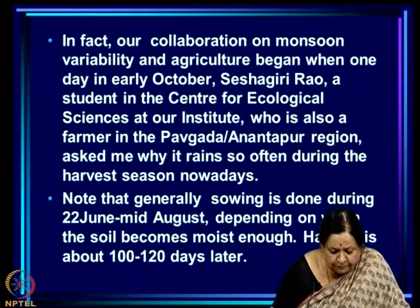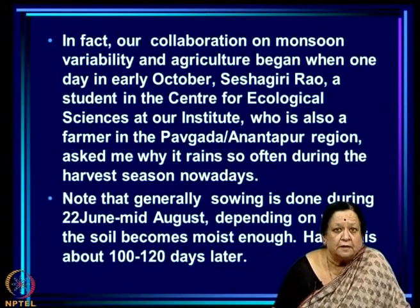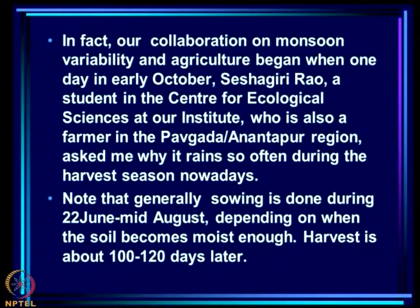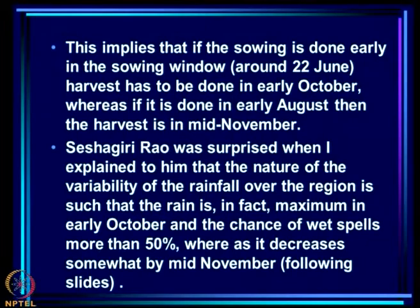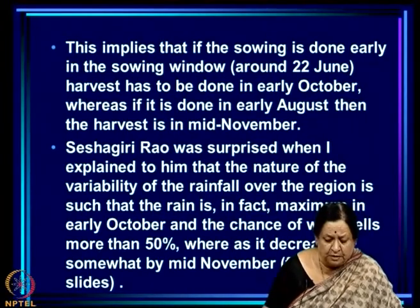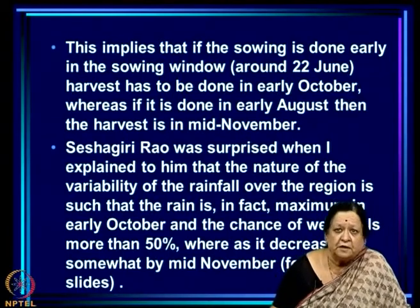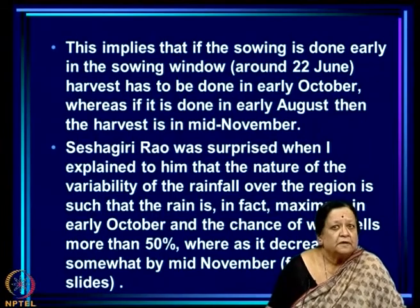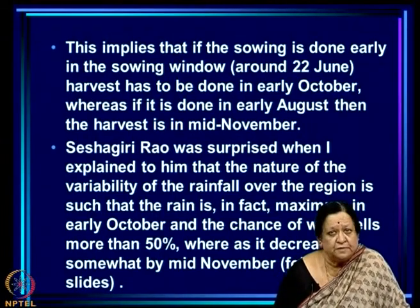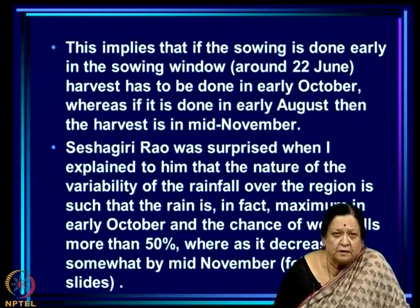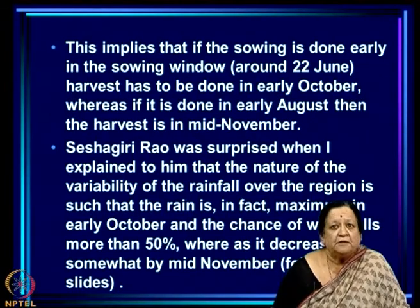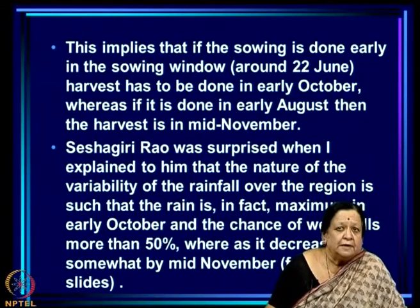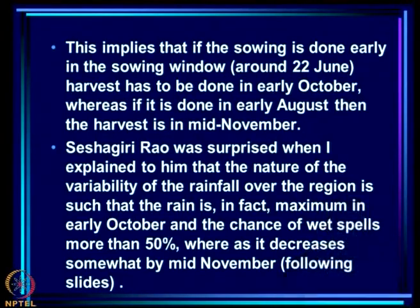Sowing is generally done from 22nd June to mid-August depending on when the soil becomes moist enough, and harvest is about 100 to 120 days later. This means that if sowing is done early — around 22nd June — harvest falls in early October, counting about 110 days. If sowing is done in early August, harvest comes in mid-November. Sheshgiri Rao was very surprised when I told him that rainfall over the region is in fact maximum in early October — exactly when harvest time would fall if one had sown around 22nd June.